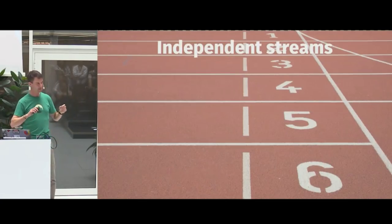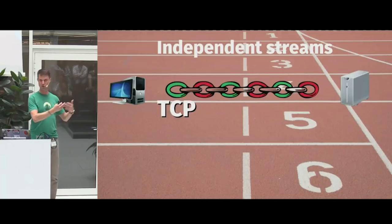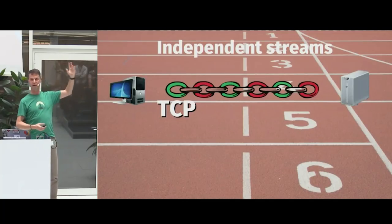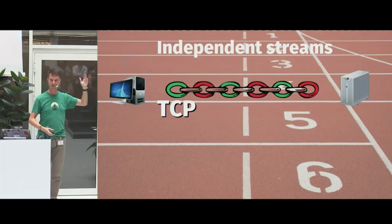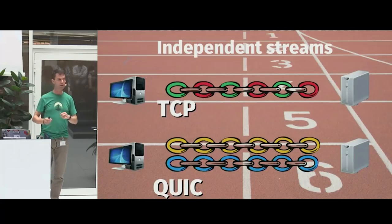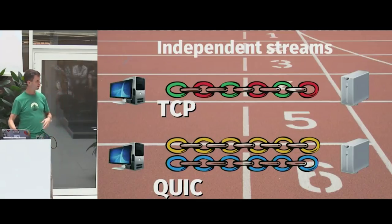Previously with TCP, it was like a chain — when you lost the red packet, the green had to wait because all links are interconnected. With QUIC, they're separate chains. If we lose the blue link, the yellow one can go on anyway. A question clarified: it's selective repeat — you only retransmit the missing data, not from that point onward, which is different from TCP in the details.